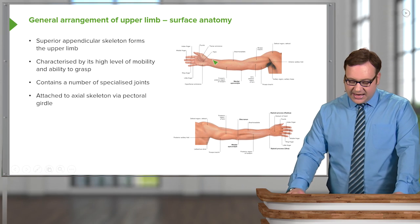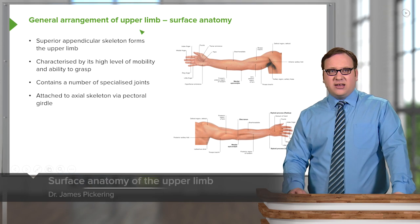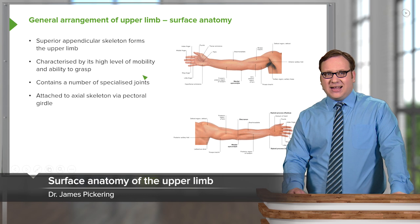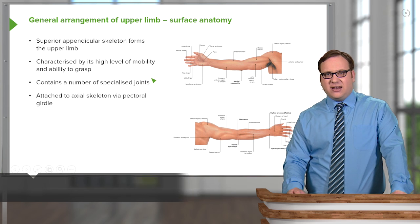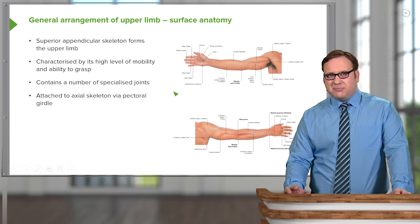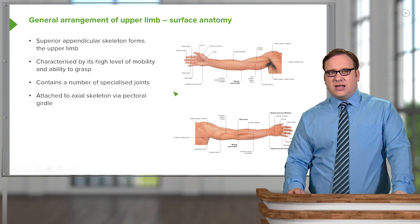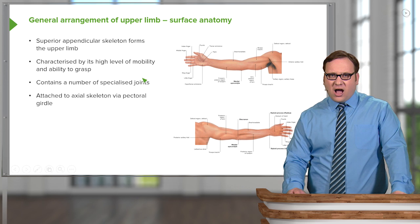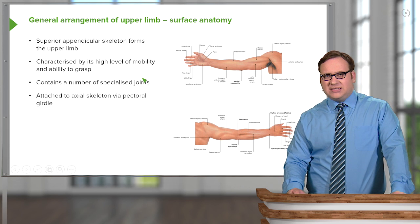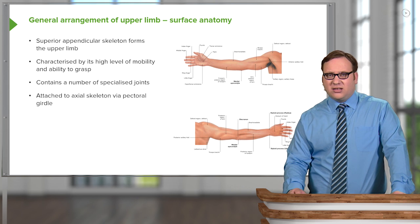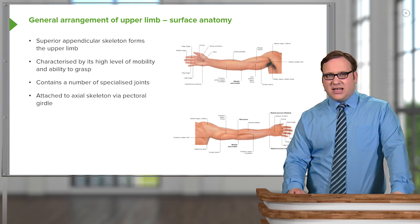This region that we can see here on the slide is part of the superior appendicular skeleton and it forms the upper limb. The upper limb is important because it has a high level of mobility, which is given to it via the pectoral girdle, which we'll see in a few slides time.